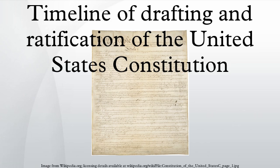November 20: Ratifying convention begins in Pennsylvania. December 3: Ratifying convention begins in Delaware. December 7: Delaware becomes the first state to ratify the Constitution. December 11: Ratifying convention begins in New Jersey. December 12: Pennsylvania becomes the second state to ratify the Constitution. December 18: New Jersey becomes the third state to ratify the Constitution. December 18: The Pennsylvania convention minority publishes their dissent. December 25: Ratifying convention begins in Georgia.